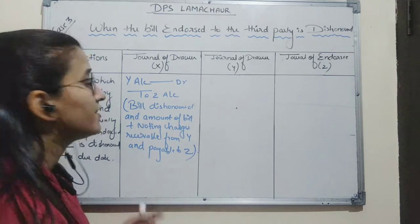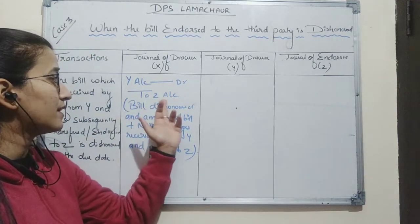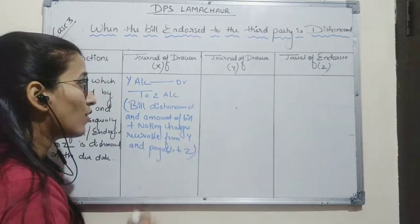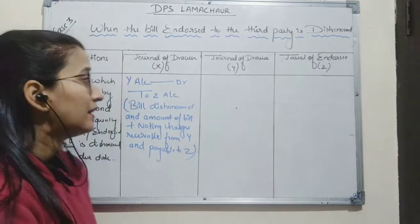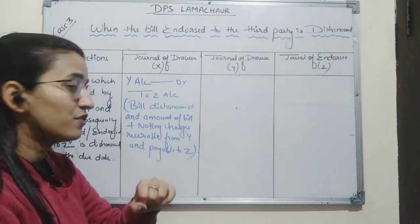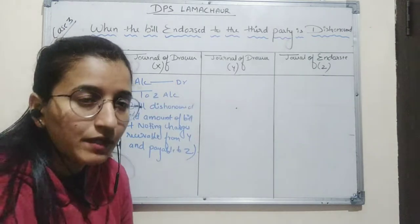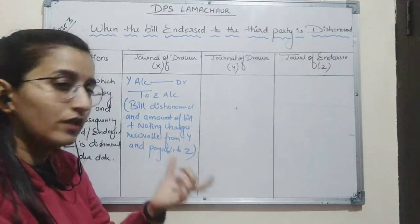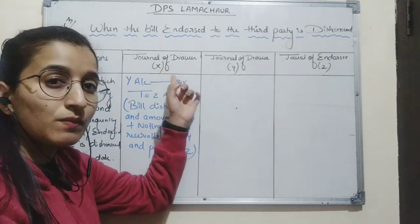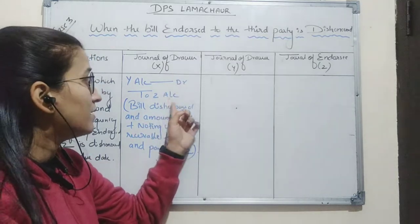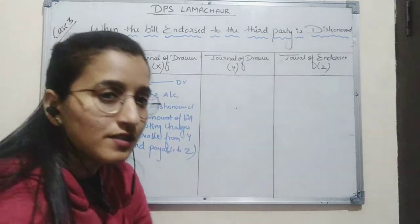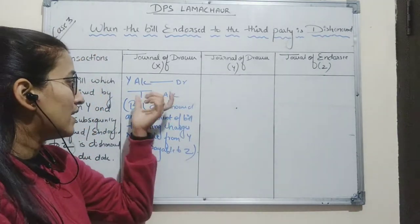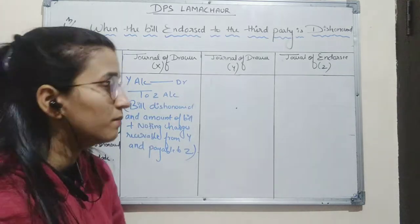In the books of X, the entry will be Y account debit to Z account. Y account is debited because Y is the person responsible for the dishonor of the bill, meaning Y has become the debtor again. The amount of bills receivable and noting charges is received by X, and X will pay this amount to Z because X endorsed the bill to Z. So Z's account will be credited because Z is the payee and will receive the amount of the bill.